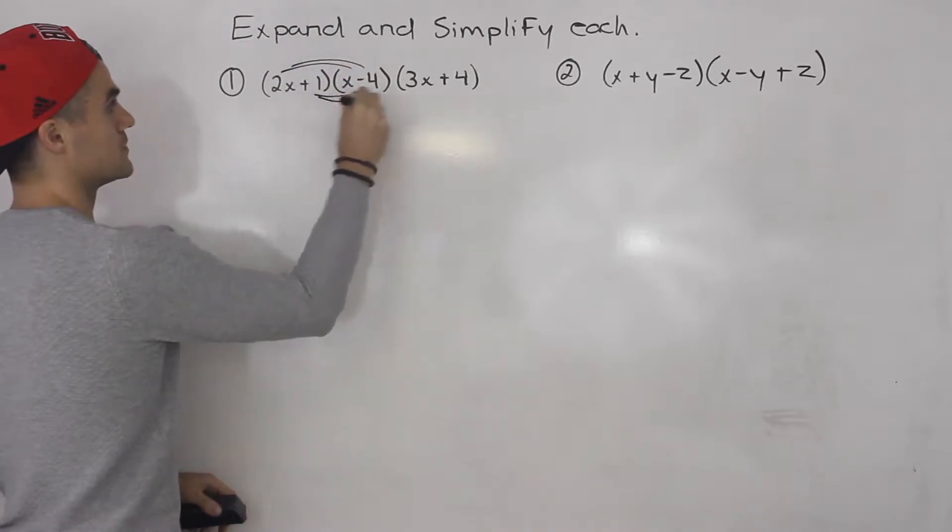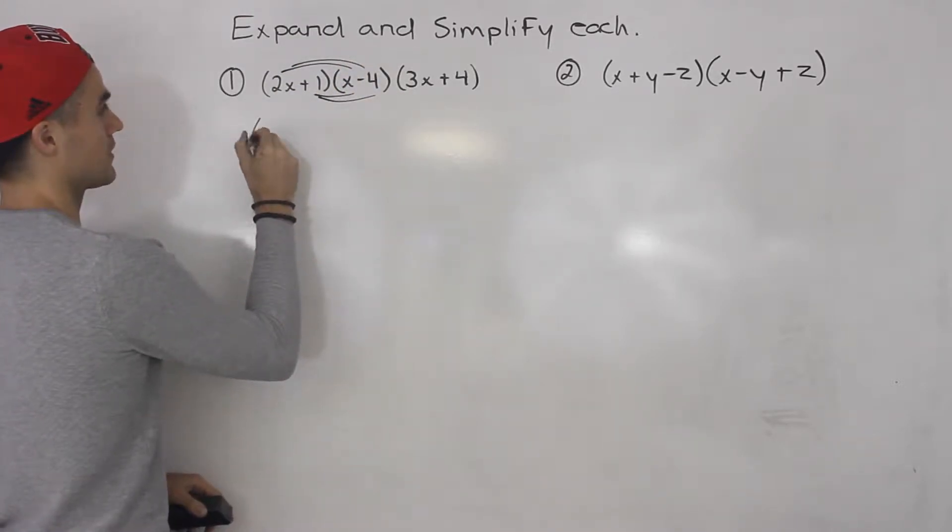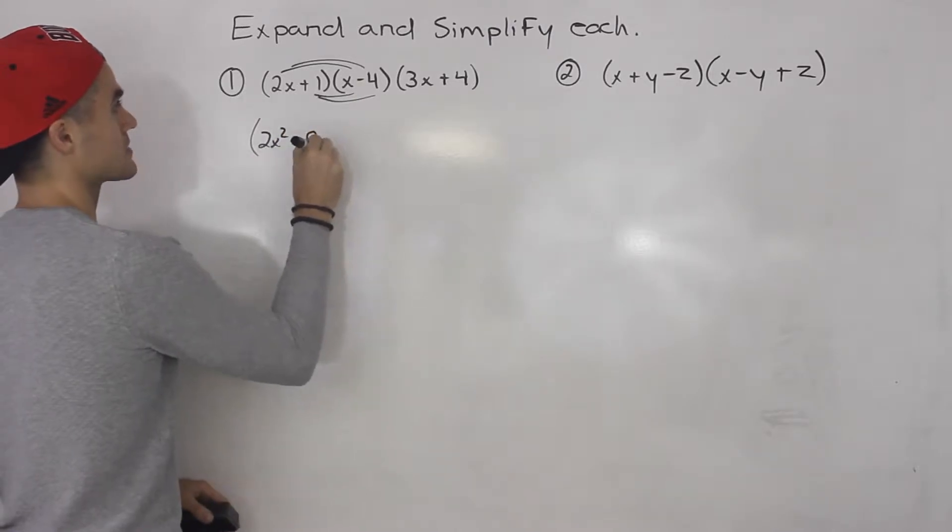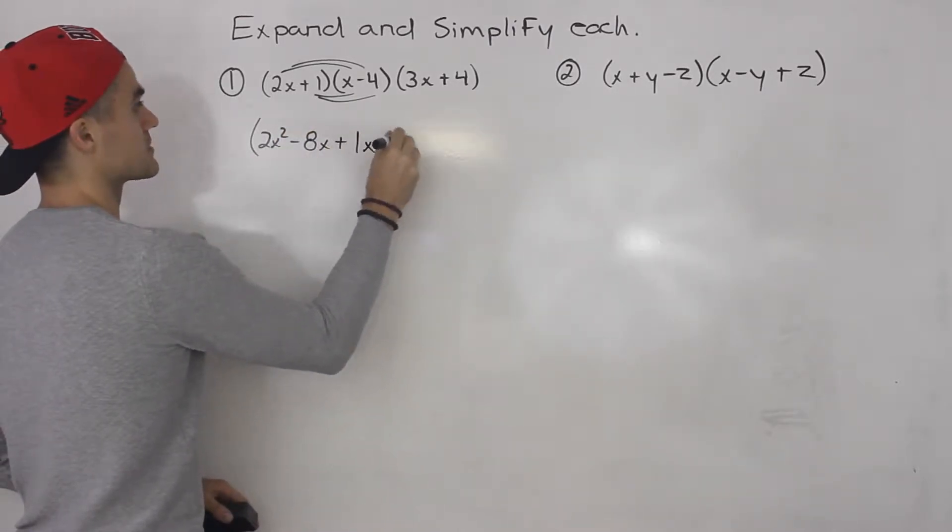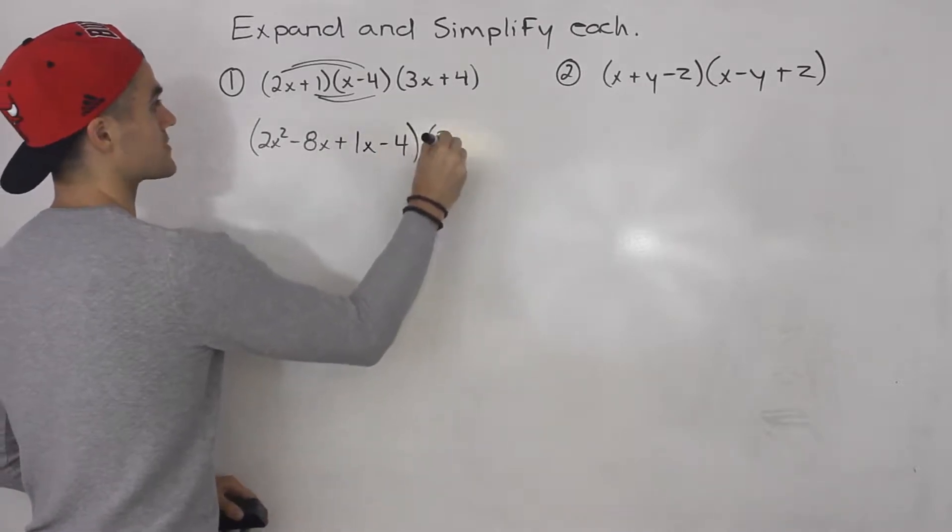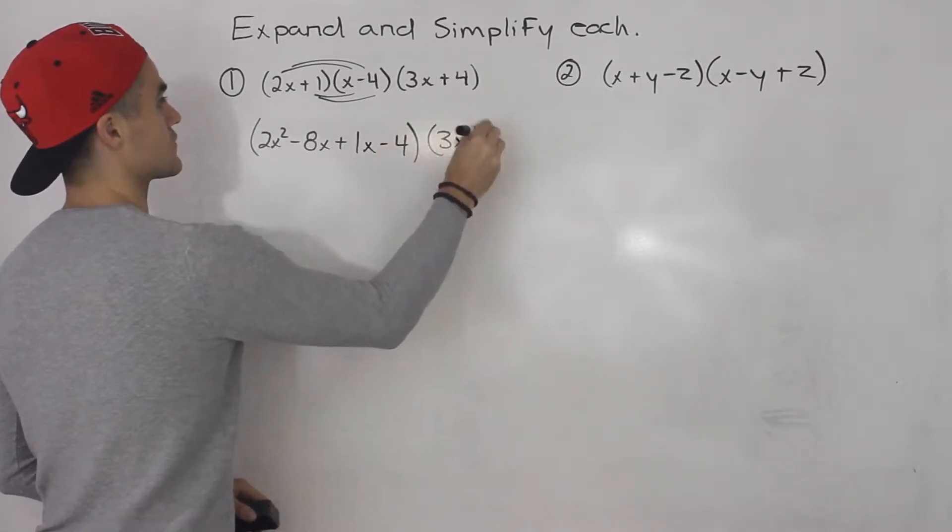So doing that we would end up here getting 2x squared minus 8x plus 1x minus 4. Then this 3x plus 4 stays over here.